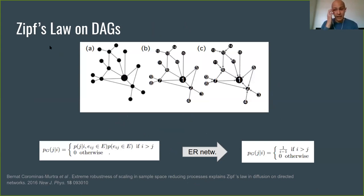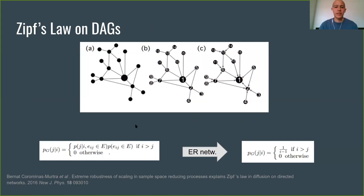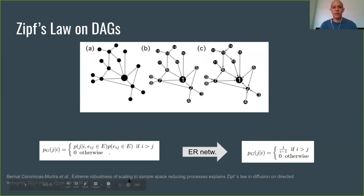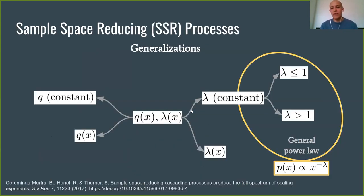A simple application: random walkers on directed acyclic graphs. The probability distribution will be given by the matrix of edges. If you have a random network, this easily generalizes to Zipf's law as in the basic scenario. If you actually have cycles, you can model this with a driving parameter that creates noise.